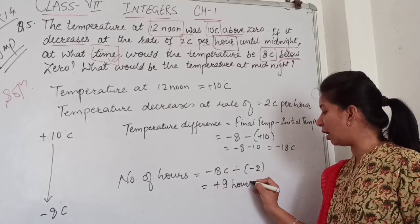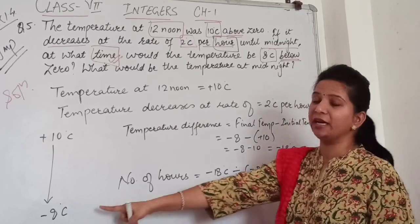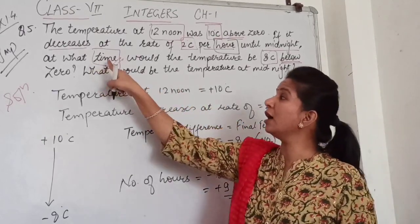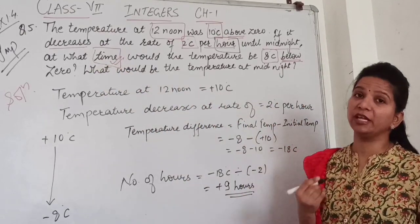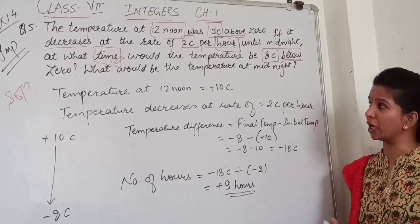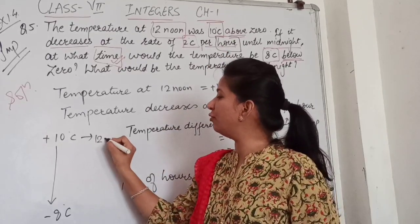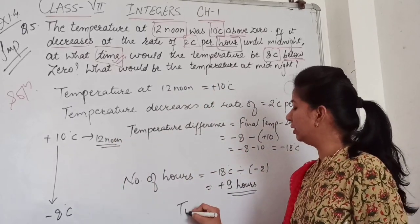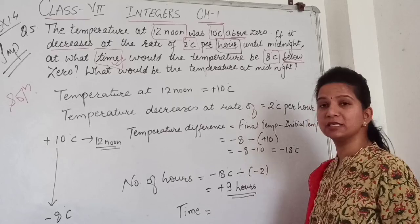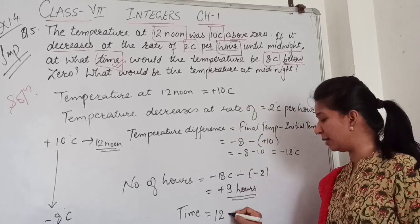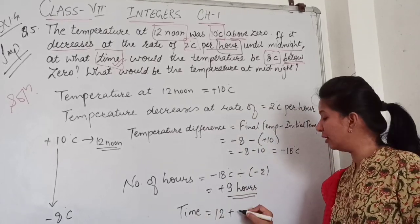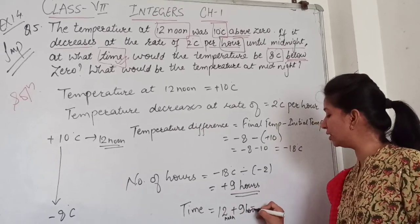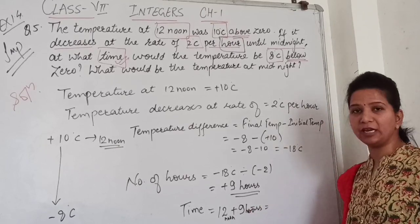So in 9 hours, the temperature reaches minus 8 degrees. But this is not the final answer because the question asks what time it is. We started at 12 noon, which is 12 o'clock, so 12 plus 9 hours gives us 9 PM. We get minus 8 degrees Celsius temperature at 9 at night.